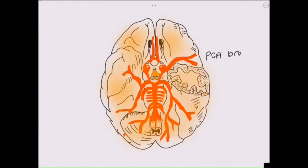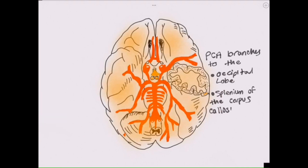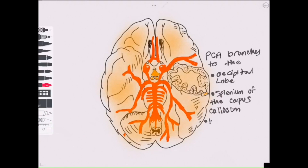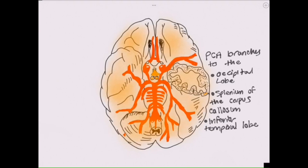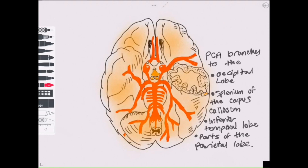The PCA then runs posteriorly along the inferior aspect of the brain, giving off a number of superficial branches to the occipital lobe, splenium of the corpus callosum, inferior aspect of the temporal lobe, and parts of the parietal lobe. However, there's a large degree of anatomical variation. That summarises the anatomy of the posterior cerebral artery.